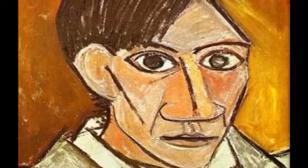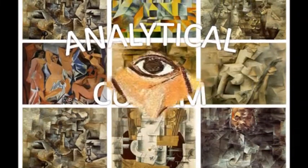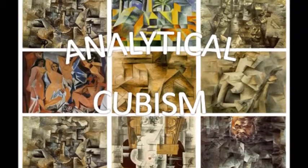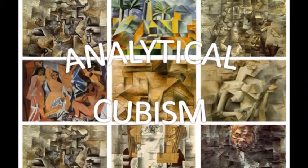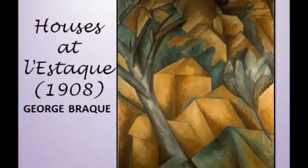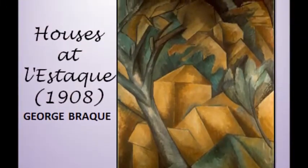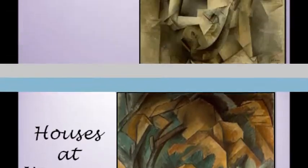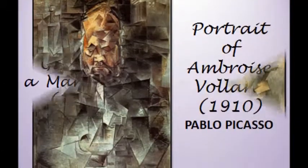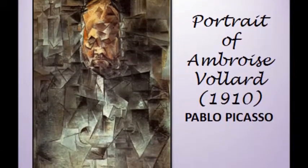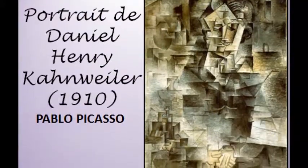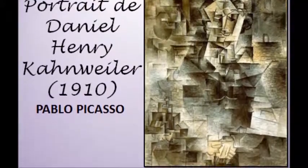Cubism had two phases: analytical cubism and synthetic cubism. Analytical cubism was the early phase which lasted until 1912. It was distinguished by its geometric style and different viewpoints to create the image subject. However, analytical cubism was limited in color, which made the paintings look duotonal.